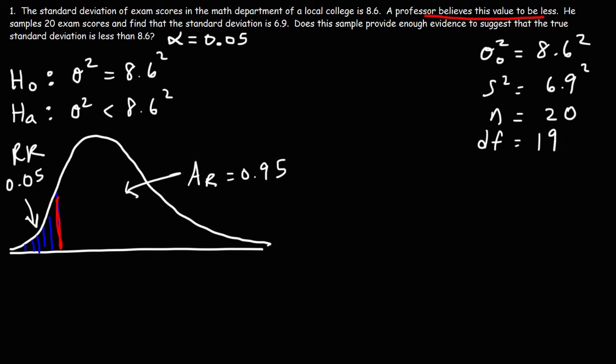So let's find our critical value. We have 19 degrees of freedom with an area to the right of 0.95.